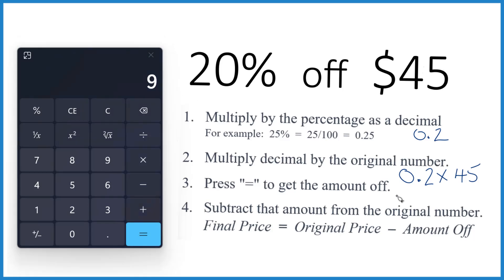So that 9, that's $9, and that's the amount off. If we take 20% off of $45, it's $9 off.